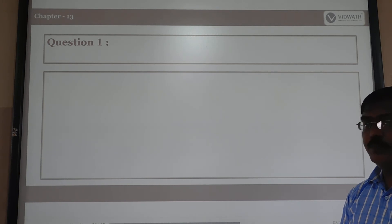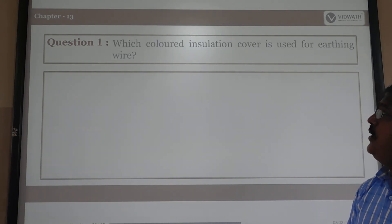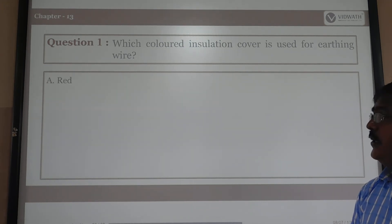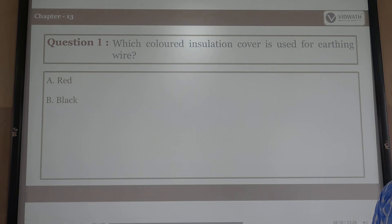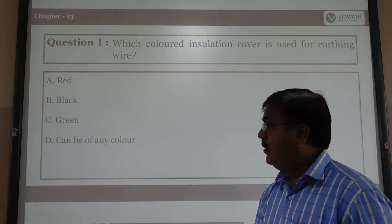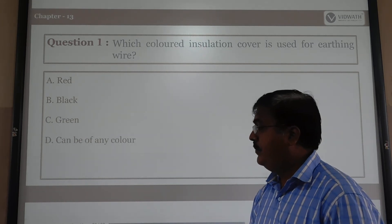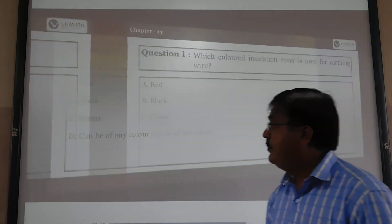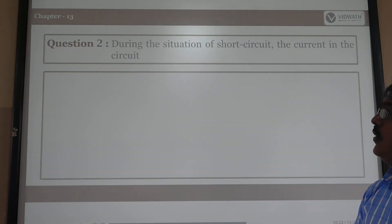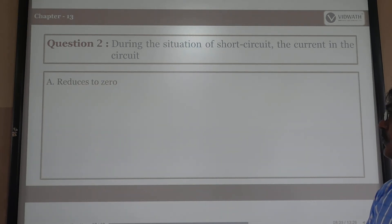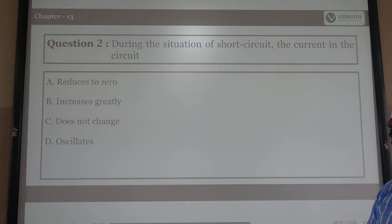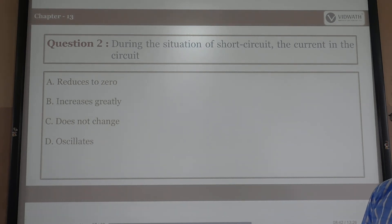Review questions: Which color insulation cover is used for the earthing wire? The answer is green color. During a short circuit situation, what happens to the current in the circuit? The current in the circuit increases greatly.